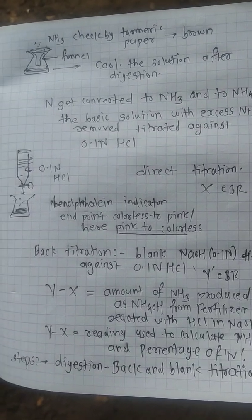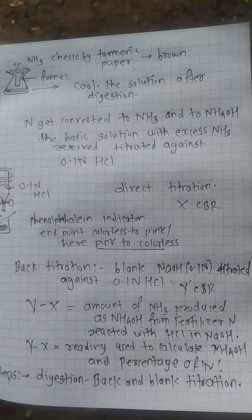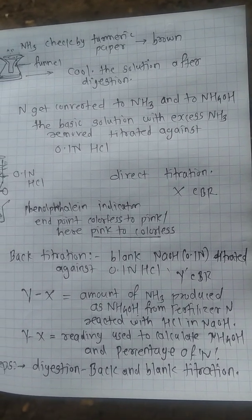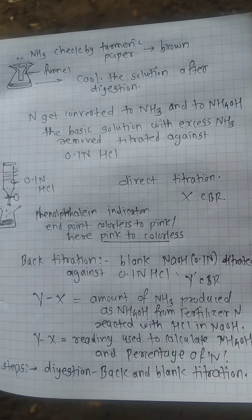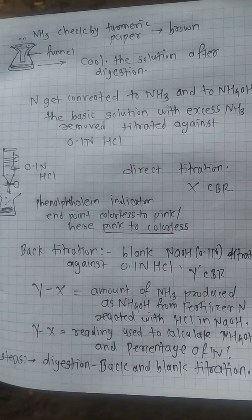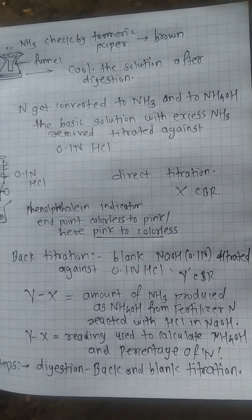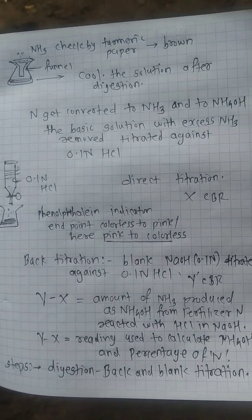That difference uses amount of NH3 produced as NH4OH from the fertilizer nitrogen reacted with HCl and NaOH in the solution. Y minus X is the reading used to calculate the ammonium hydroxide percentage of nitrogen from the fertilizer.